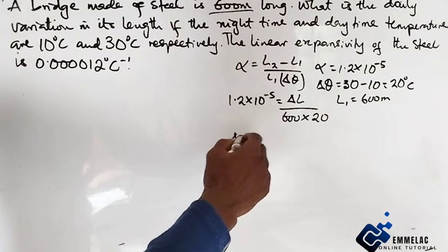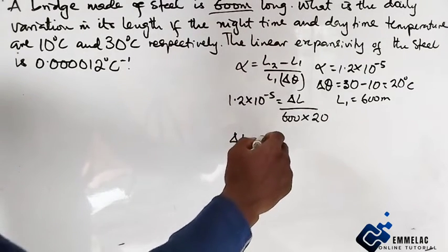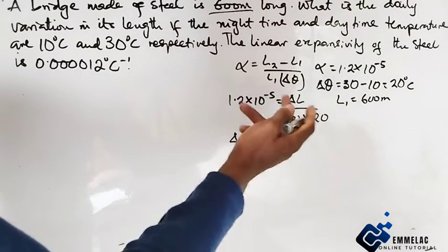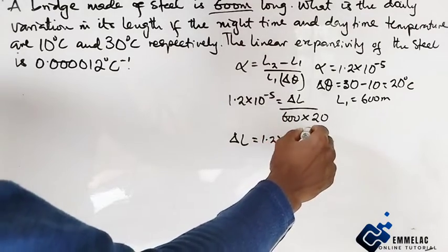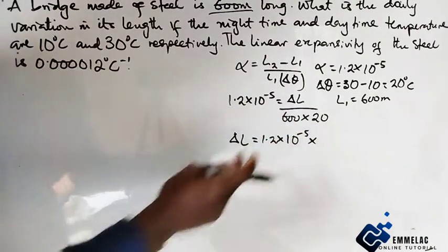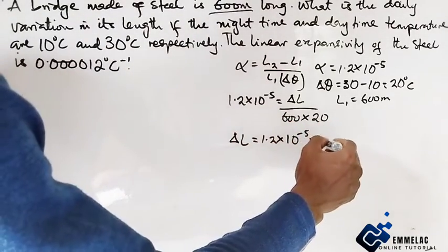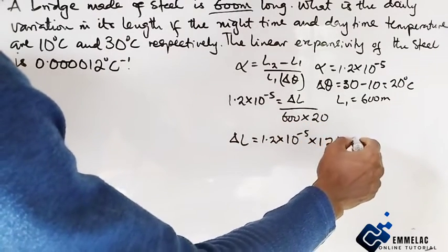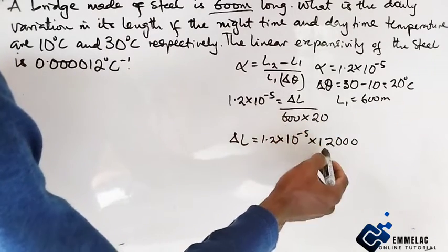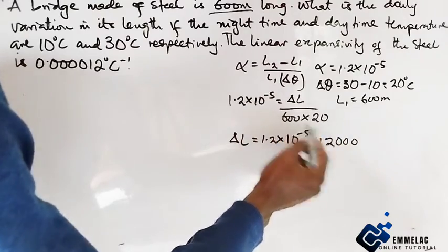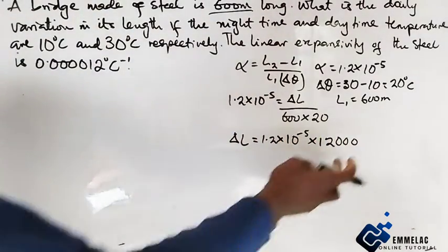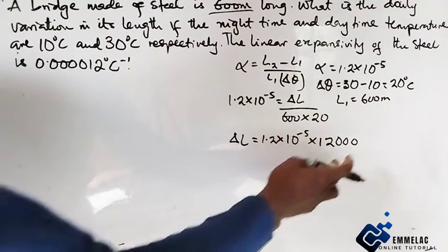Cross multiplying, we get ΔL = 1.2 × 10⁻⁵ × 600 × 20. This would be 12 times 6 is 12, so we have it. Now let's put this in standard form to simplify.